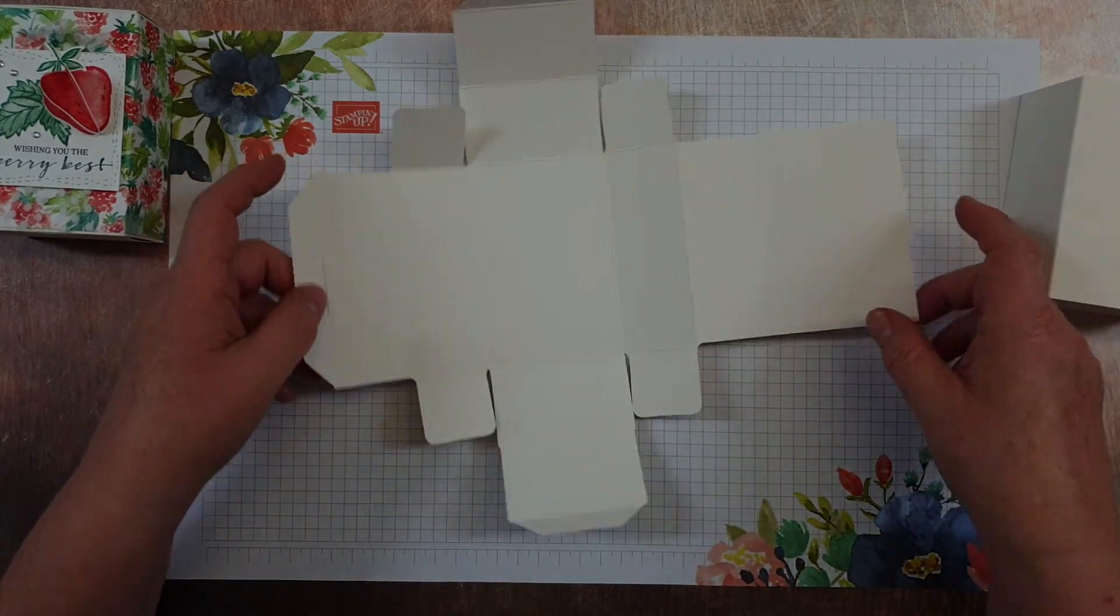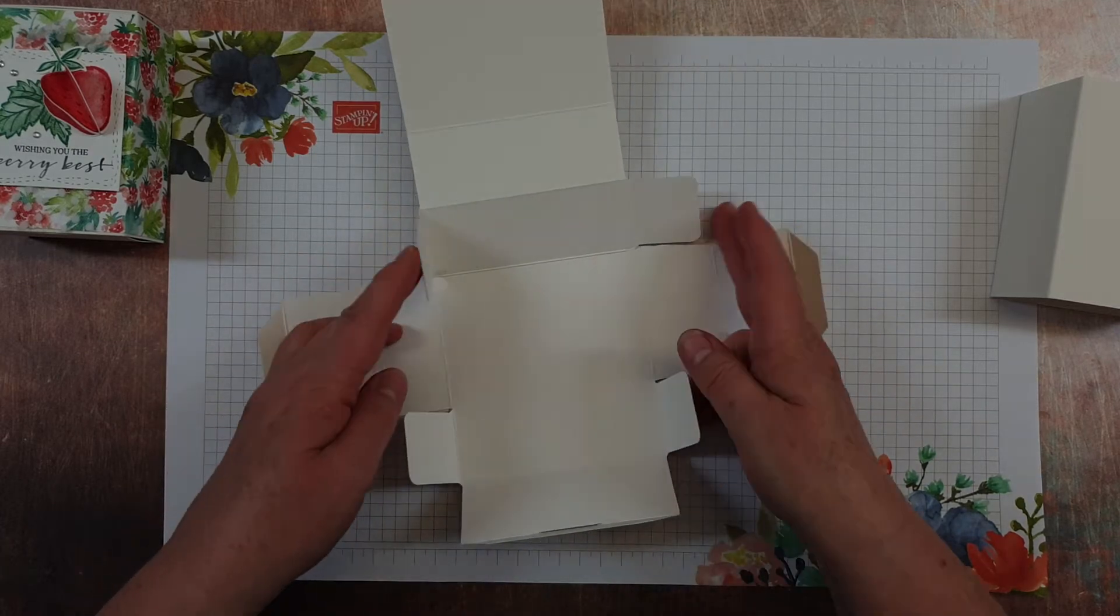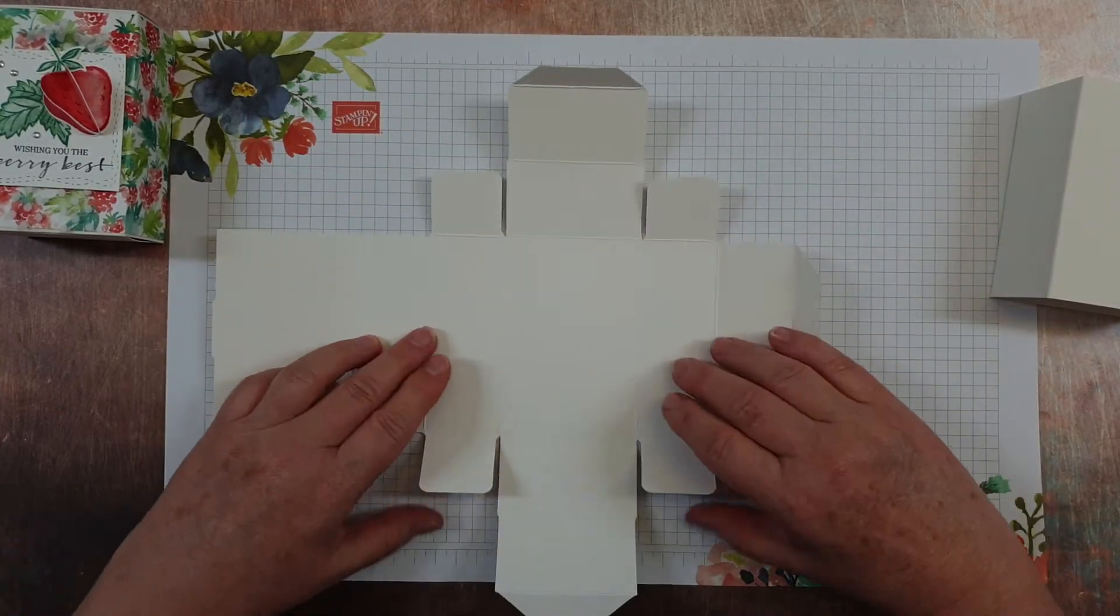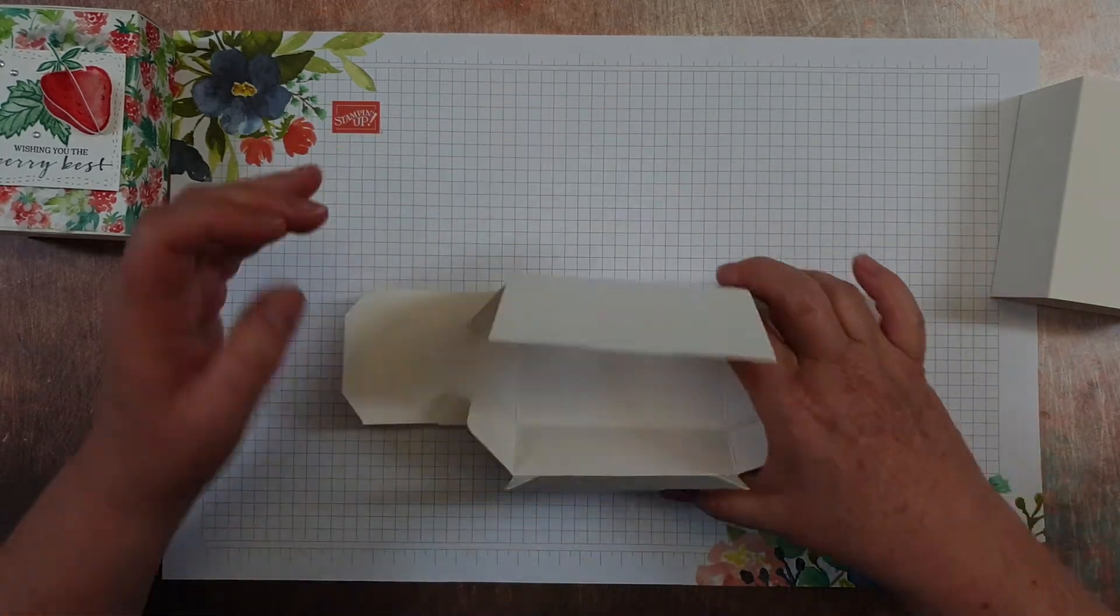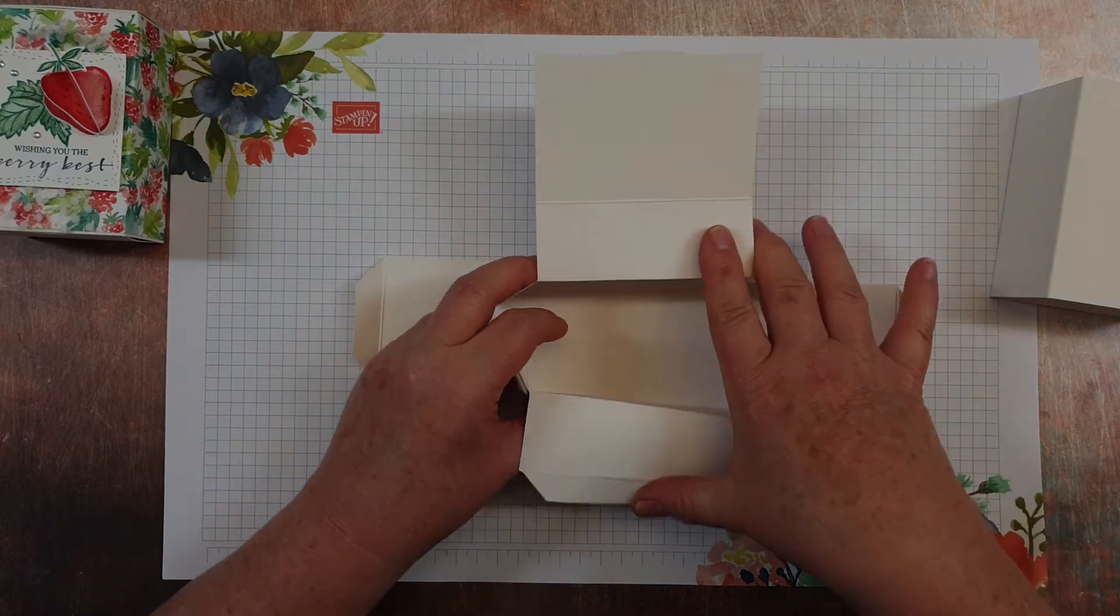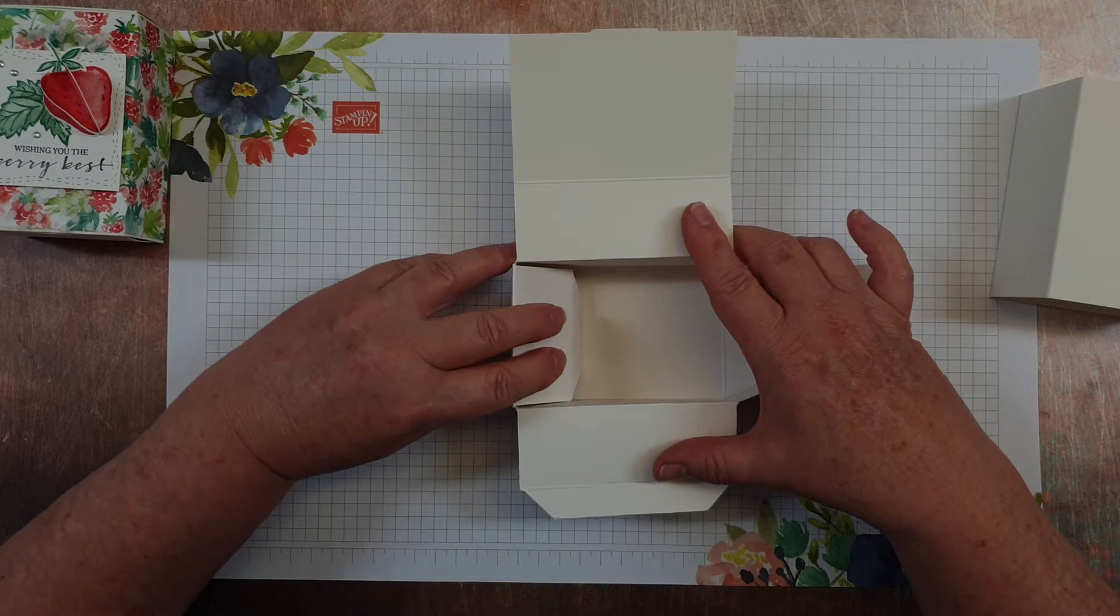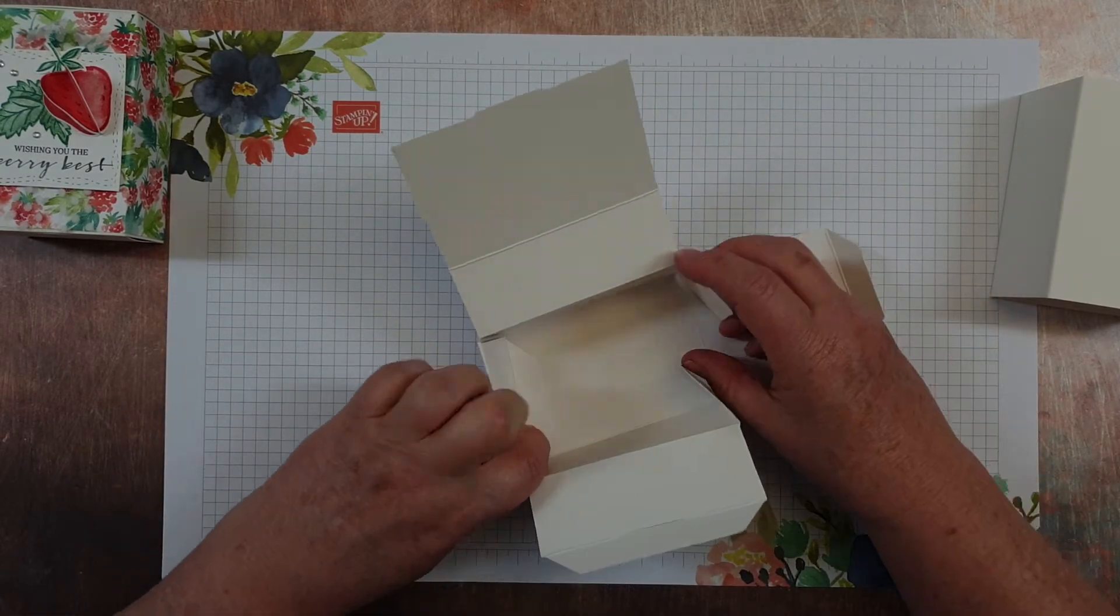You don't need any adhesive to put it together. You just need to make sure that you have folded along all the score lines before you start putting it together. So the first thing you do is the sides. You bring those side bits in and you tuck this little side bit over with the flap and you just push it in so it looks like that, and you do that on both sides.